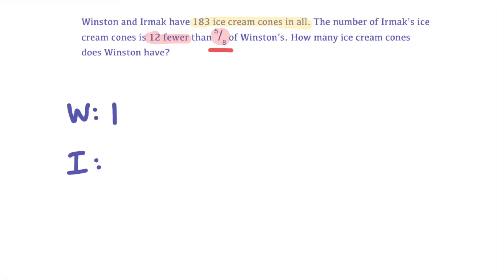And I'm going to chop Winston's into 8 blocks because I see that Ermac has just under 5 eighths. So I need to show 8's, don't I? What does 8's look like? All right, so there's Winston, 8 blocks.